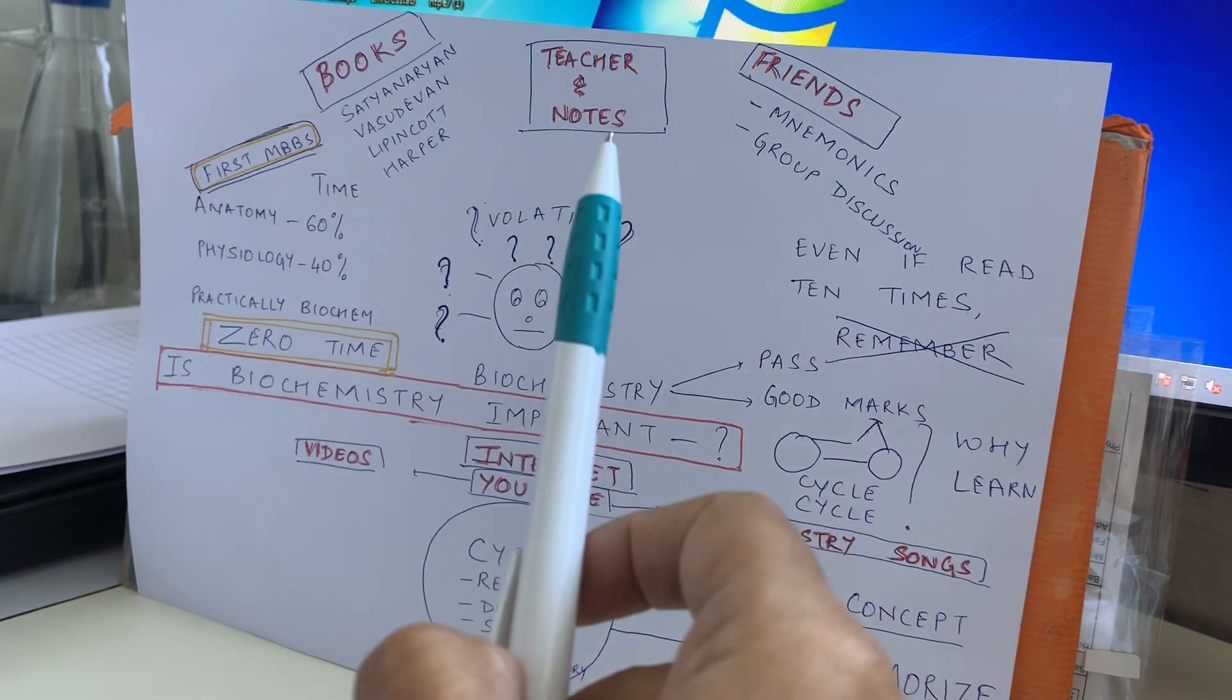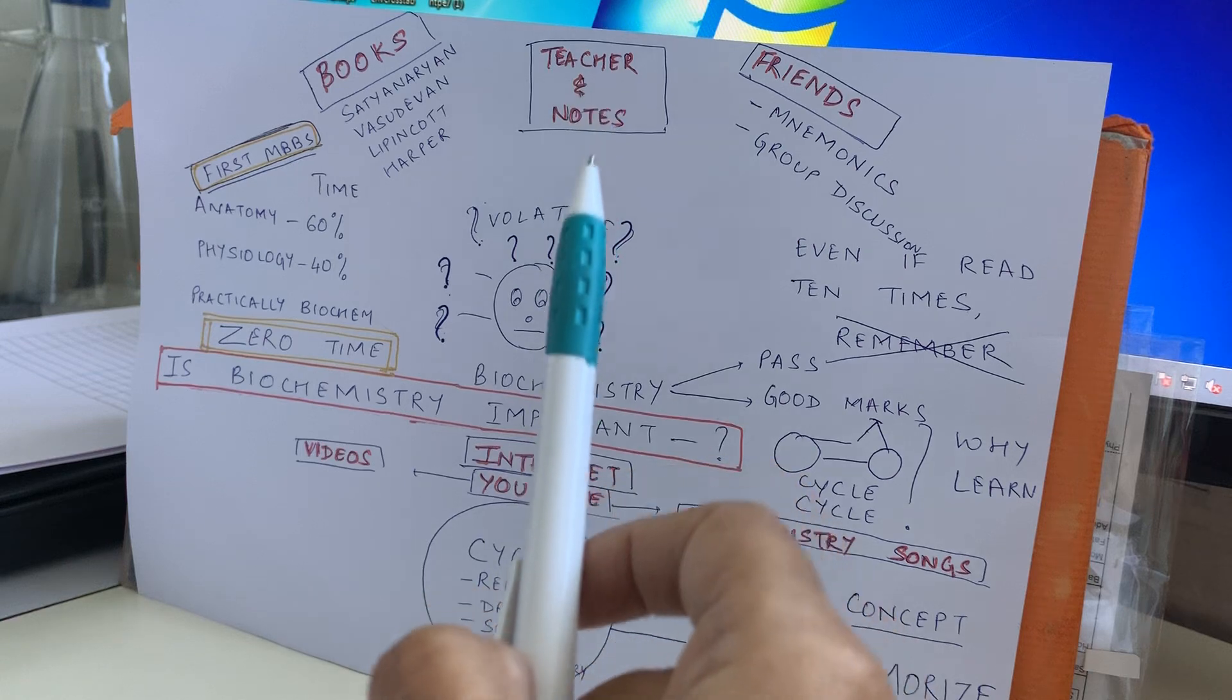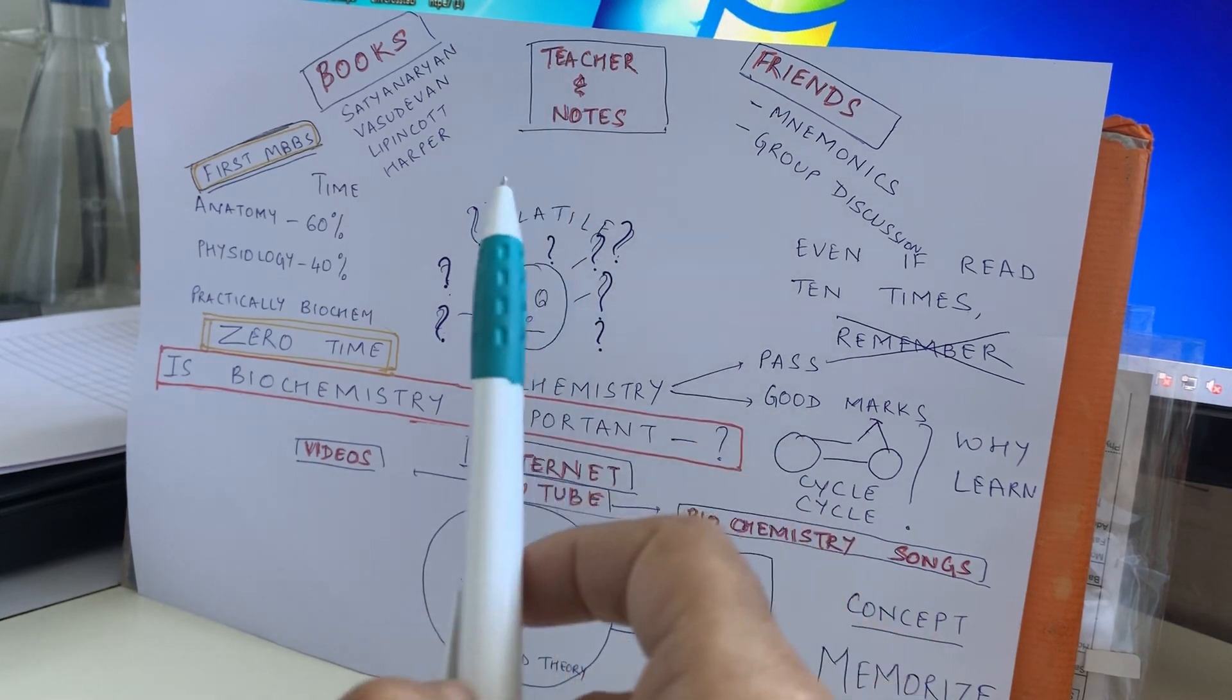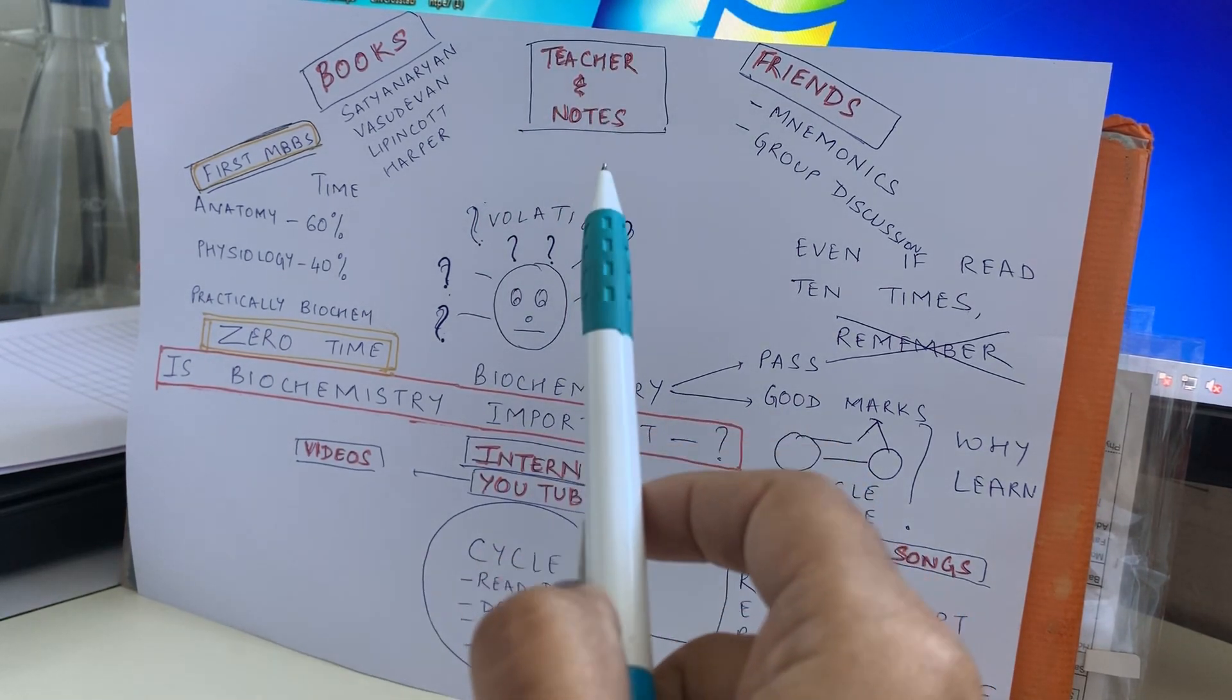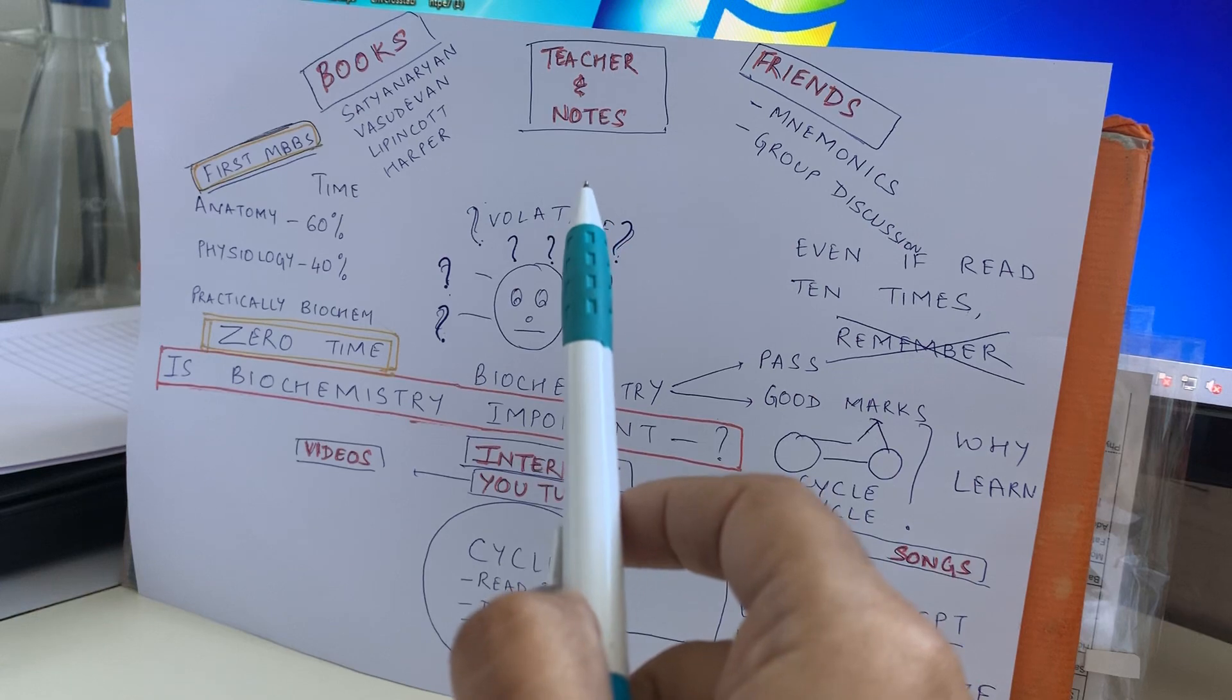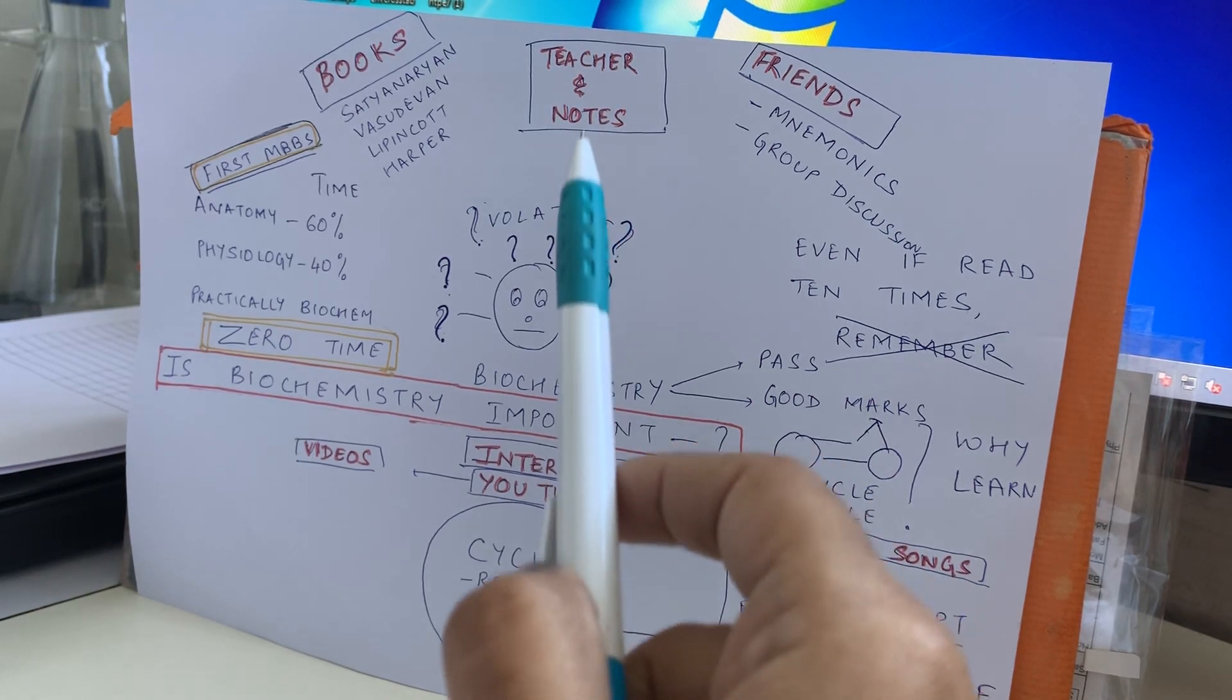Second, this teacher and notes. Most of the time biochemistry class nobody is taking. The second thing is that if somebody is taking, you are not making notes or you are bunking or the third thing is that you are sleeping. But I will advise just remember at least which topic which teacher is taking, because that will be very important in your viva, because generally the teachers ask those questions only in the viva what they have taught.